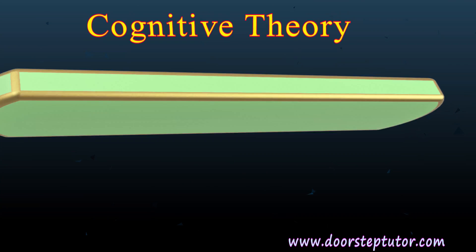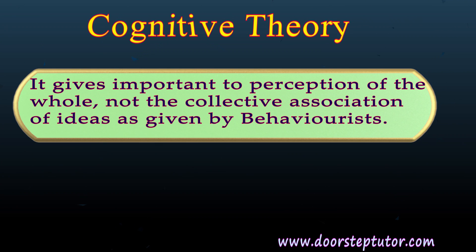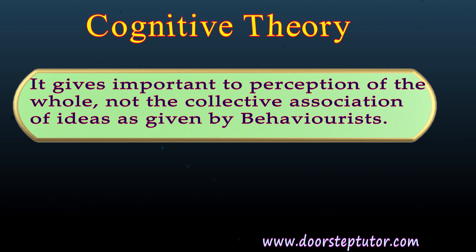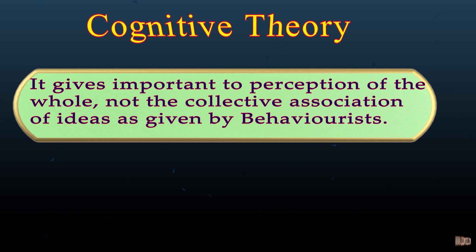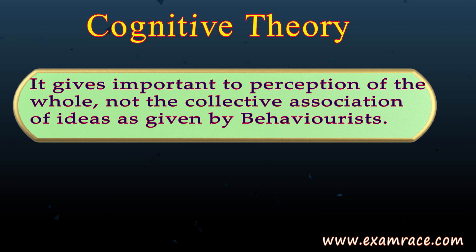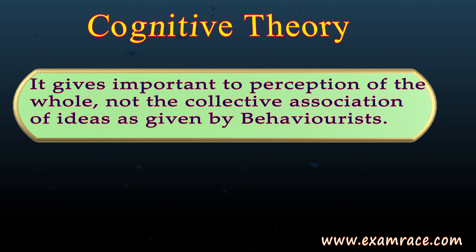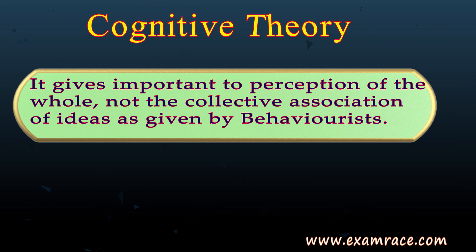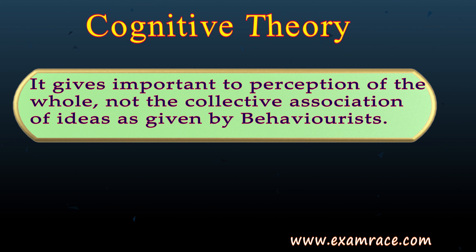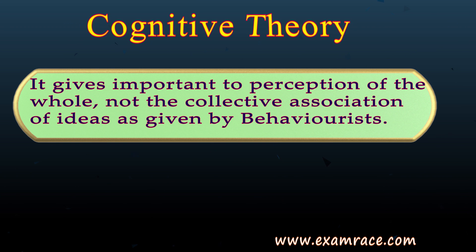The main emphasis of cognitive theory is that the learning task is perceived in a holistic perspective instead of an atomistic perspective. The new school of thought on cognitive theories stresses on Gestalt learning. It gives importance to the perception of the whole, not the collective association of ideas as given by behaviorists.